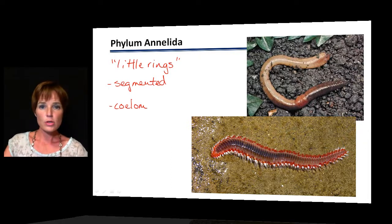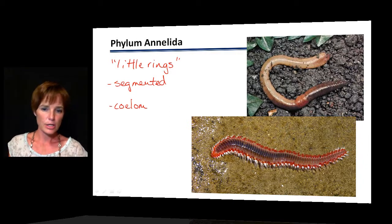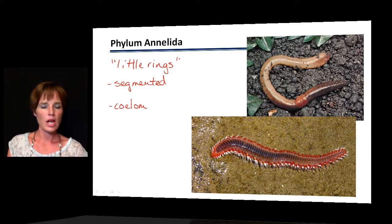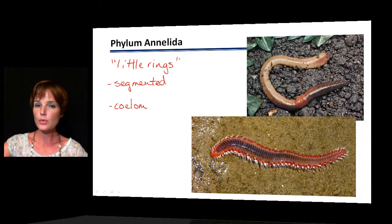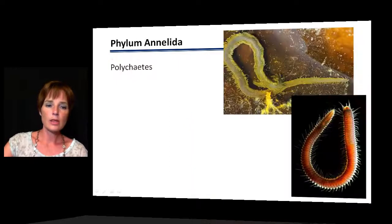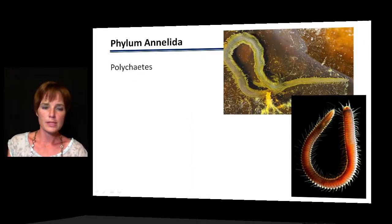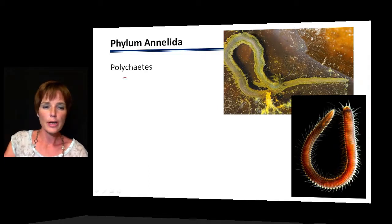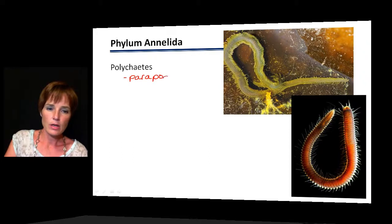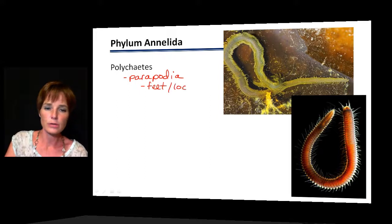There are two major groups within the Annelida. The earthworm at the top is a smoother-bodied worm. The group at the bottom is the polychaetes, which have little feet or hairs all along them called parapodia — structures that function in locomotion.